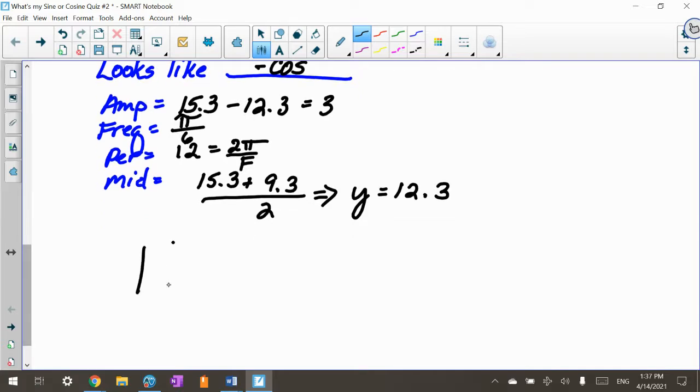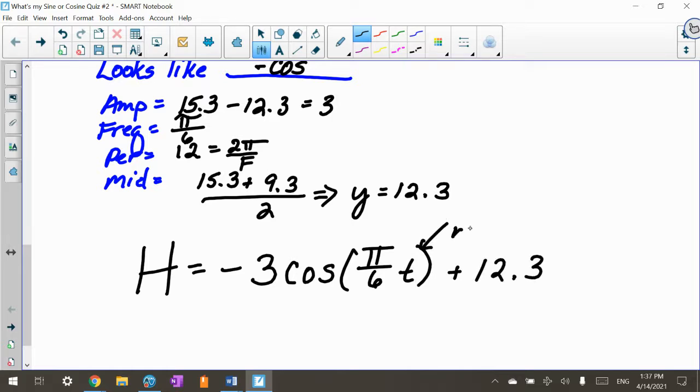So my hours of daylight, we'll call that h, is negative 3 because it's an inverted cosine curve. The amplitude is not negative, just to remind you. Negative 3 cosine, and then I've got π over 6t plus 12.3. My time is in months, and this is my hours of daylight so that you know your units. There's our equation of the situation they gave us about hours of daylight.